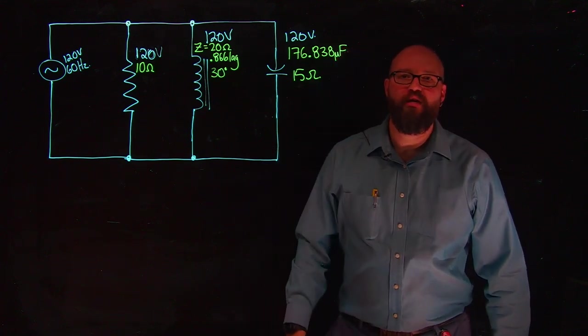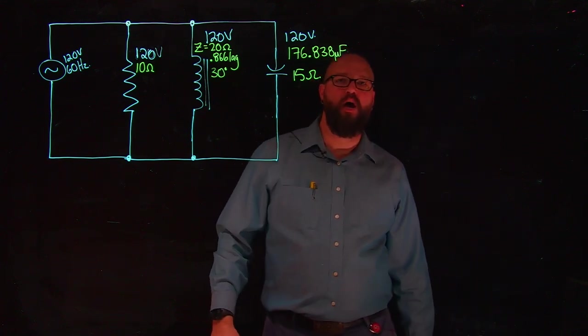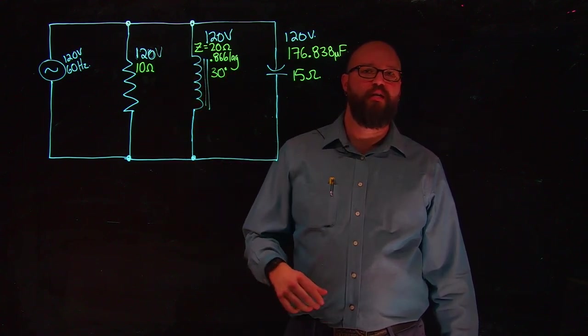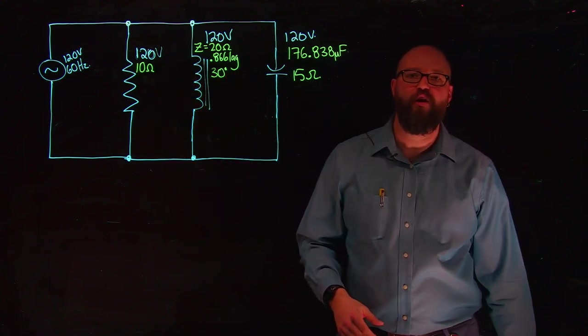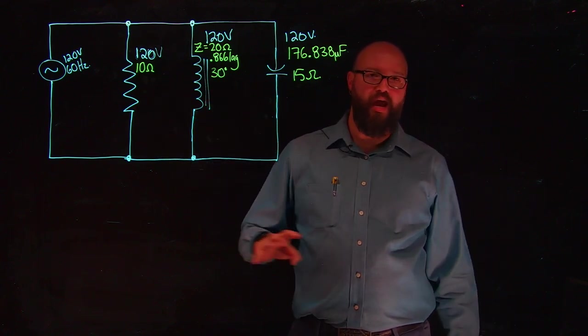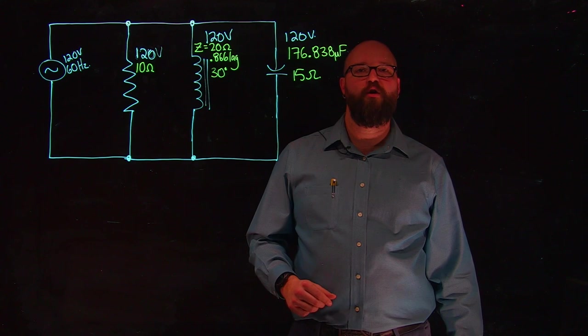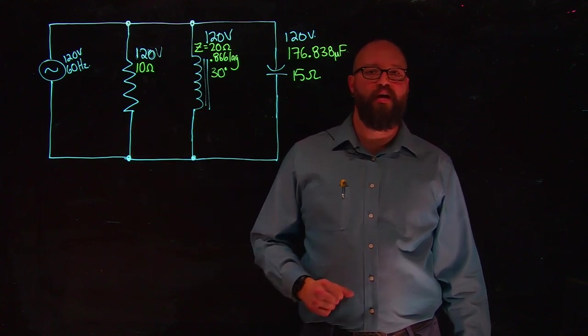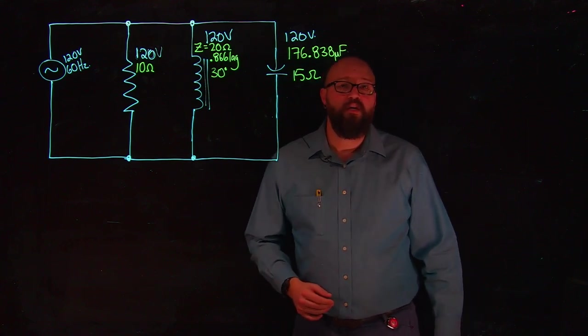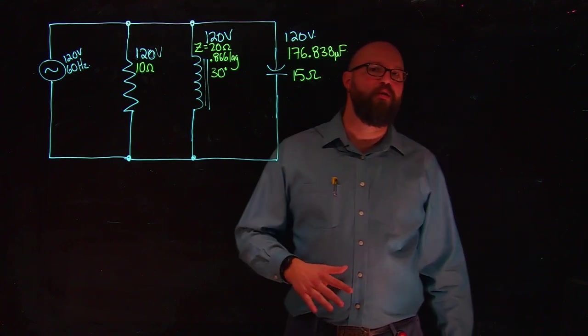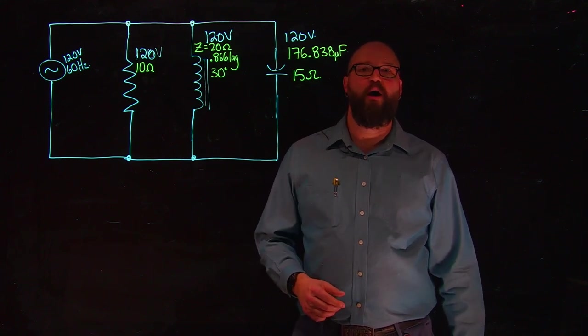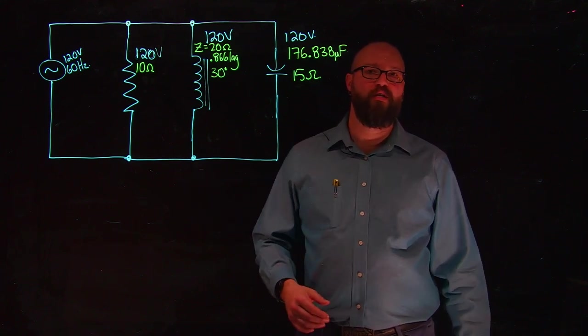Hi everyone, thanks for joining me. This is the second part of a two-part video solving this exact circuit using now the power method. In the previous video, we went through and identified the current through each branch and added them vectorially to determine the line current of our circuit and its respective phase angle. What I want to do in this video is walk through the power method where we don't use current. We can actually just use apparent power and reactive power to solve for the total line current at the end as well.